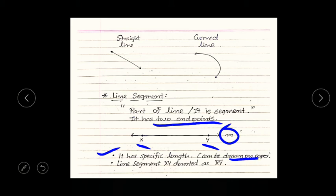A line segment has a specific length, due to which we can draw it on paper. Line segment XY can be denoted as XY bar.